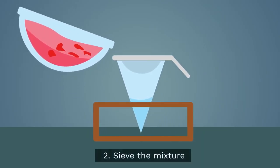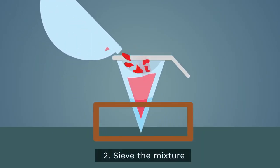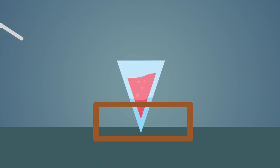The next stage is to pass the liquid through a sieve and collect the fruit soup. This will contain all the strawberry cells with the DNA inside the nucleus.